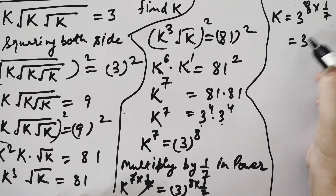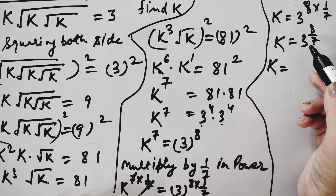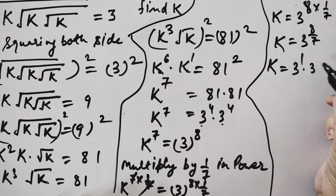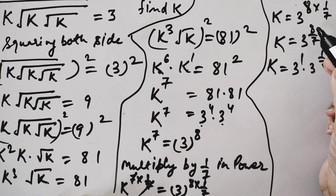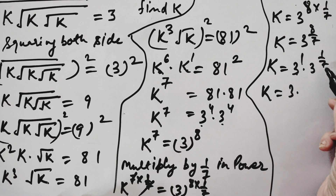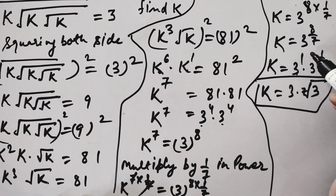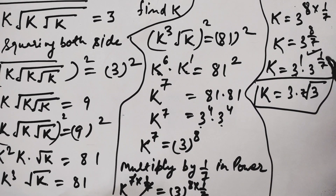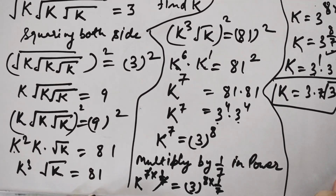So k equals 3 raised to the power 8 by 7. We can write this as 3 raised to the power 1 times 3 raised to the power 1 by 7 — adding those powers gives 8 by 7. So k equals 3 times 3 raised to the power 1 upon 7, which we write as 3 times the 7th root of 3. This is the final answer for k. Hope you have understood this question. If you like this video, please like and subscribe to my channel. Thank you for watching.